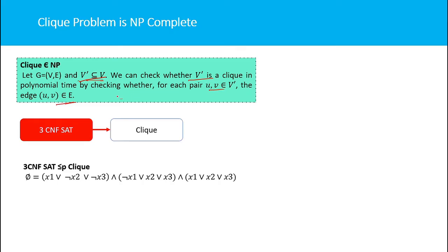Now we have to prove that the clique problem is NP-hard. To prove NP-hardness, we reduce a known NP-hard problem to the clique problem. The NP-hard problem I am using here is the 3CNF-SAT problem discussed in the previous lecture. We will reduce the 3CNF-SAT problem to the clique problem. You could also use SAT or circuit satisfiability, but here I am using 3CNF-SAT.